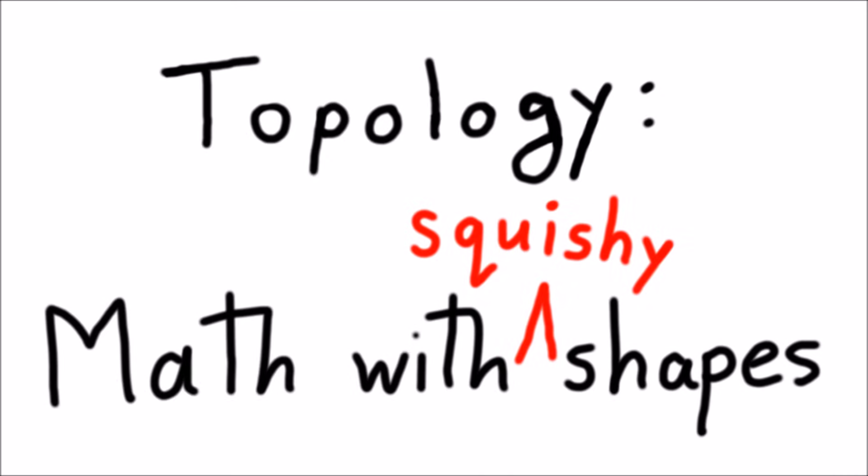Now you might be thinking, okay, but how is this math? If we're so relaxed in our definition of shape and we can't distinguish between a donut and a coffee cup, then how can we ever say anything meaningful or rigorous about the shapes we're studying? And that is an excellent point.